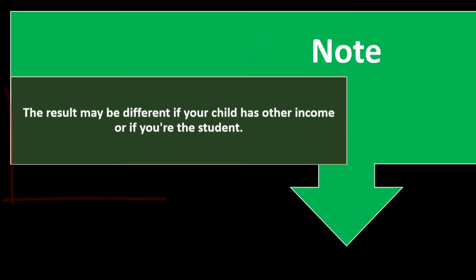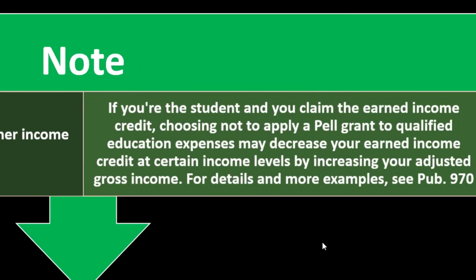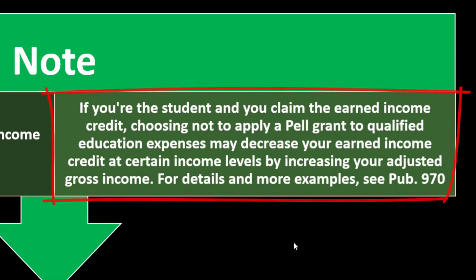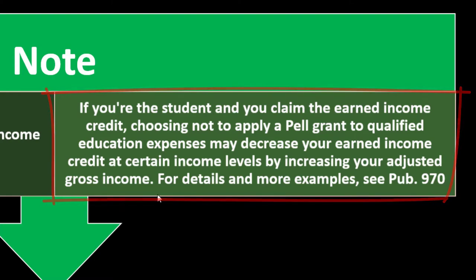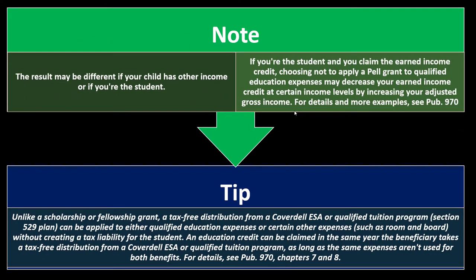This approach may be beneficial if you have low income, because you get access to the refundable portion of the credit. Even though $4,000 is now included as income, if your income is quite low it's not a big deal. If you're not otherwise required to file a tax return, you should file to claim the $1,000 refundable credit. Note: if you're the student and you claim the Earned Income Credit, choosing not to apply the Pell Grant to QEE may decrease your EIC at certain income levels by increasing your adjusted gross income, since the EIC rises with earned income before flattening and declining.